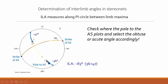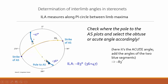Always check where the pole to the axial surface plots, then choose whether to measure the obtuse or acute angle. In this example it is the acute one — two blue segments — giving 83 degrees. Never try to determine the angle between two clusters as the interlimb angle unless the pole to the axial surface falls within one of the segments.